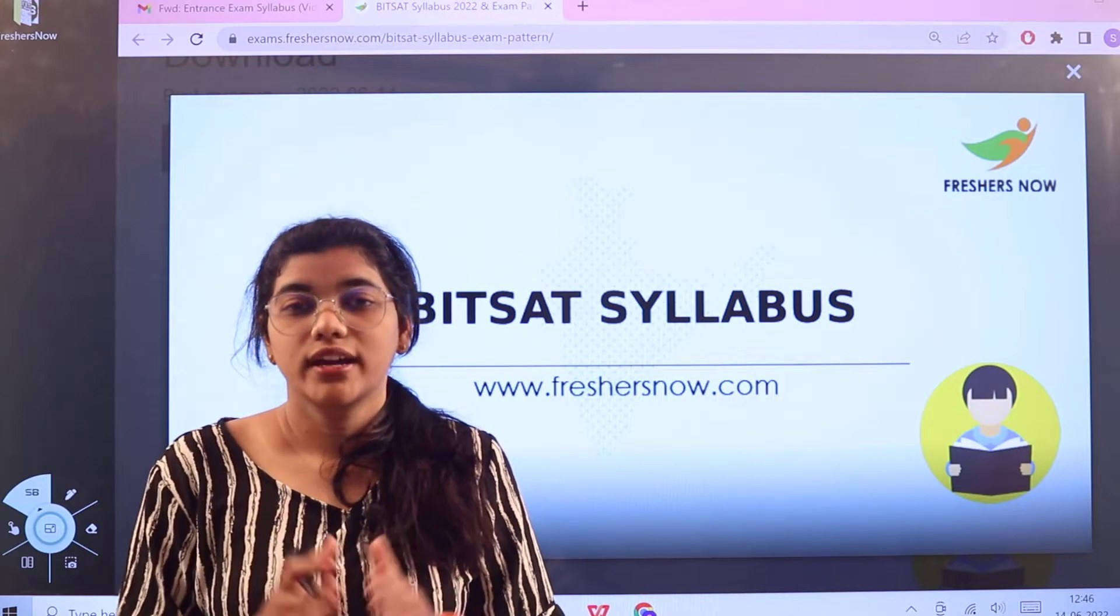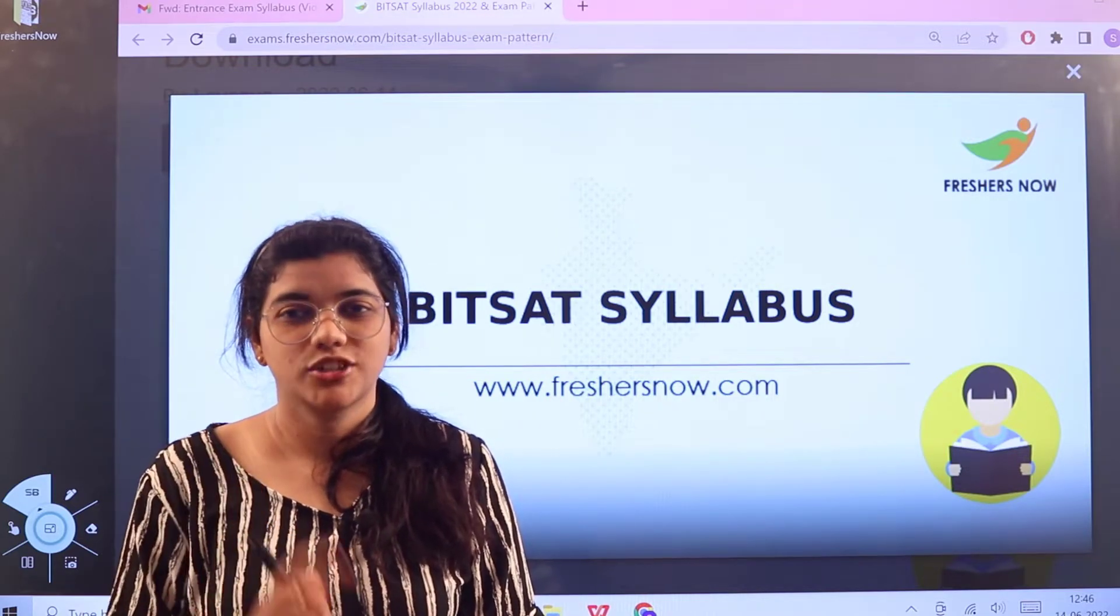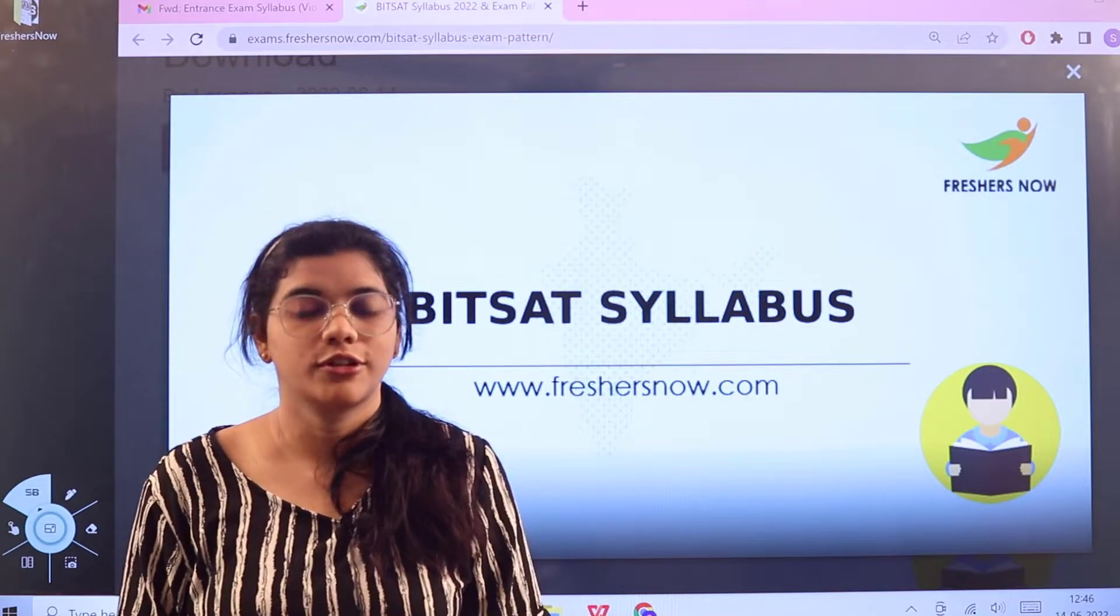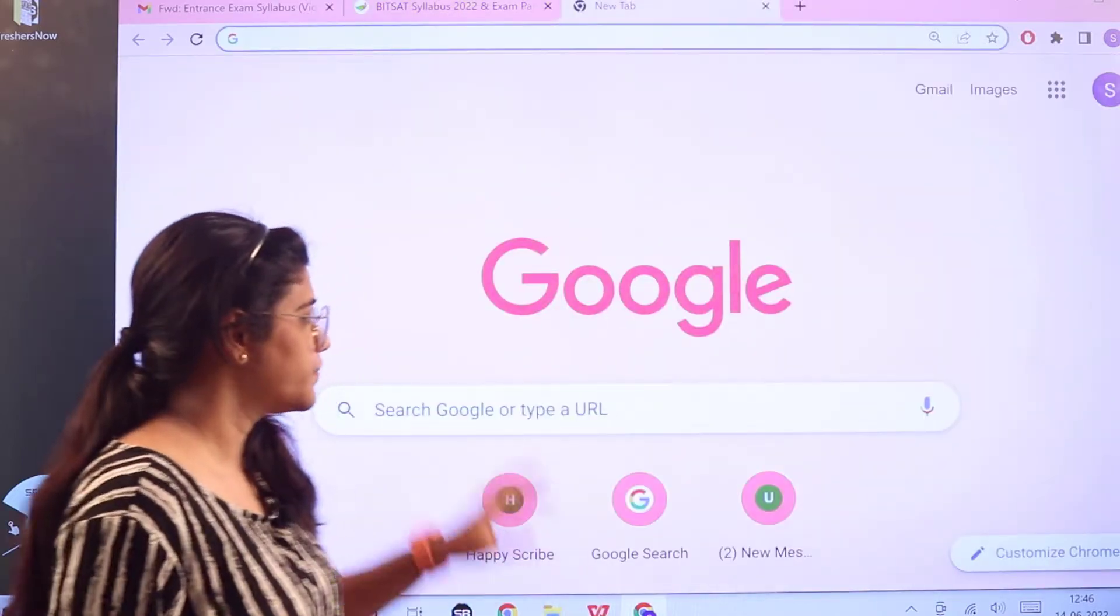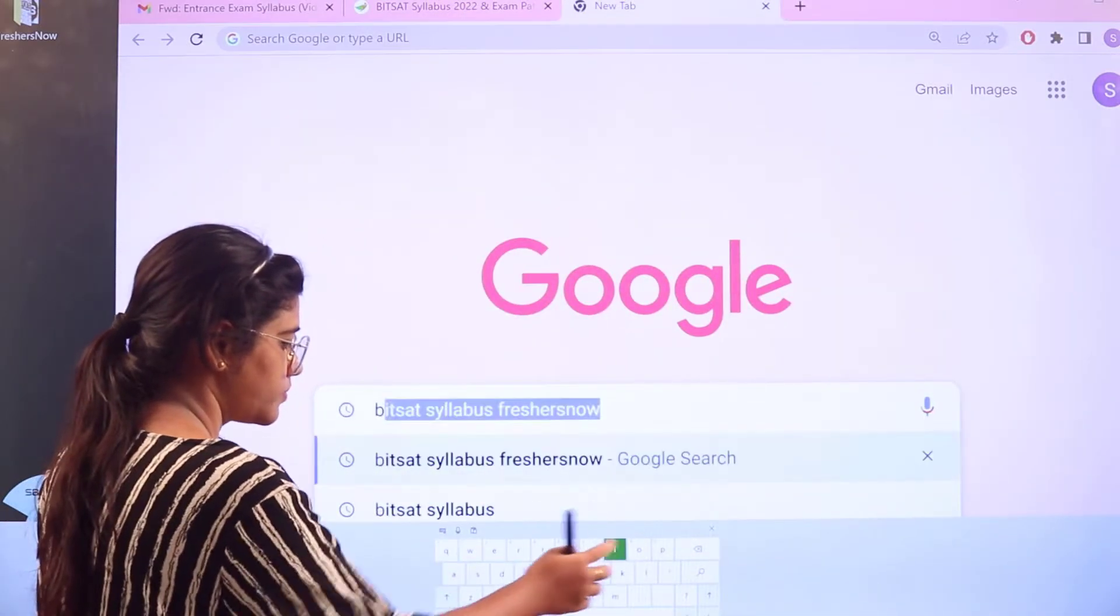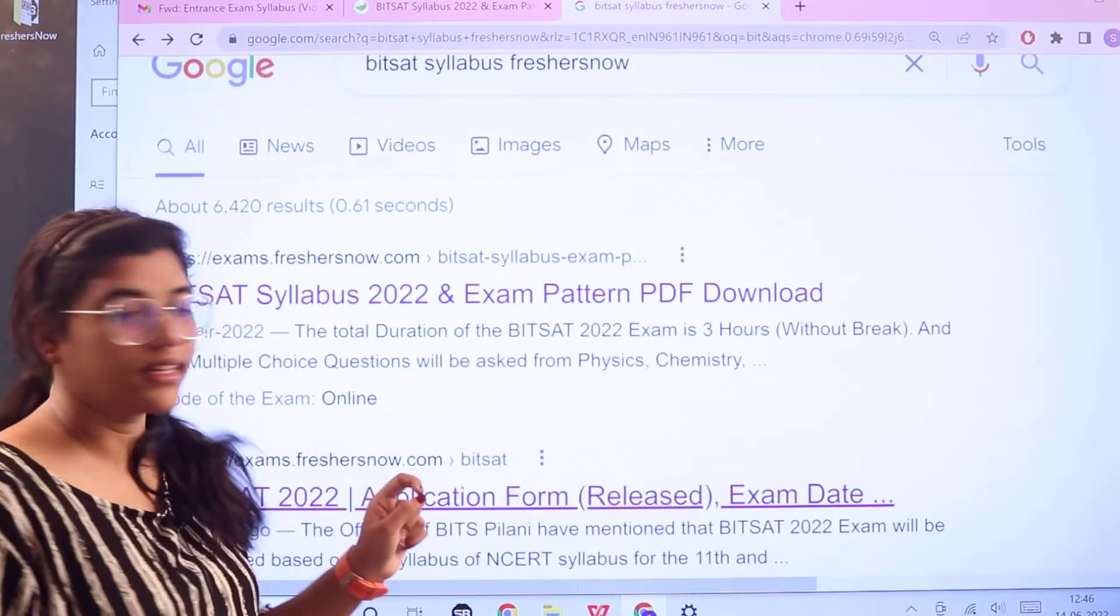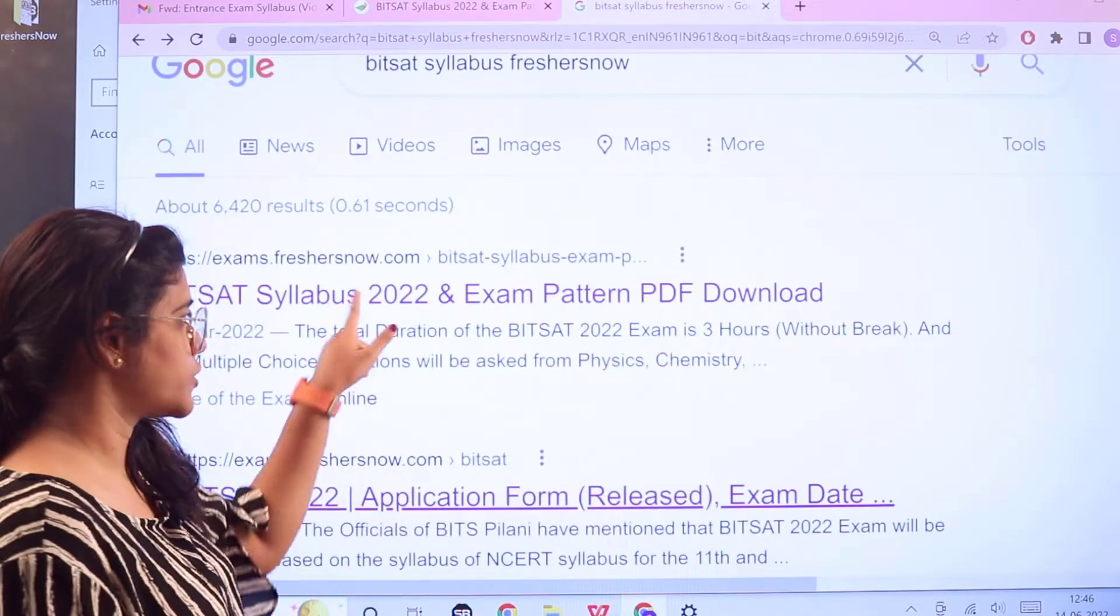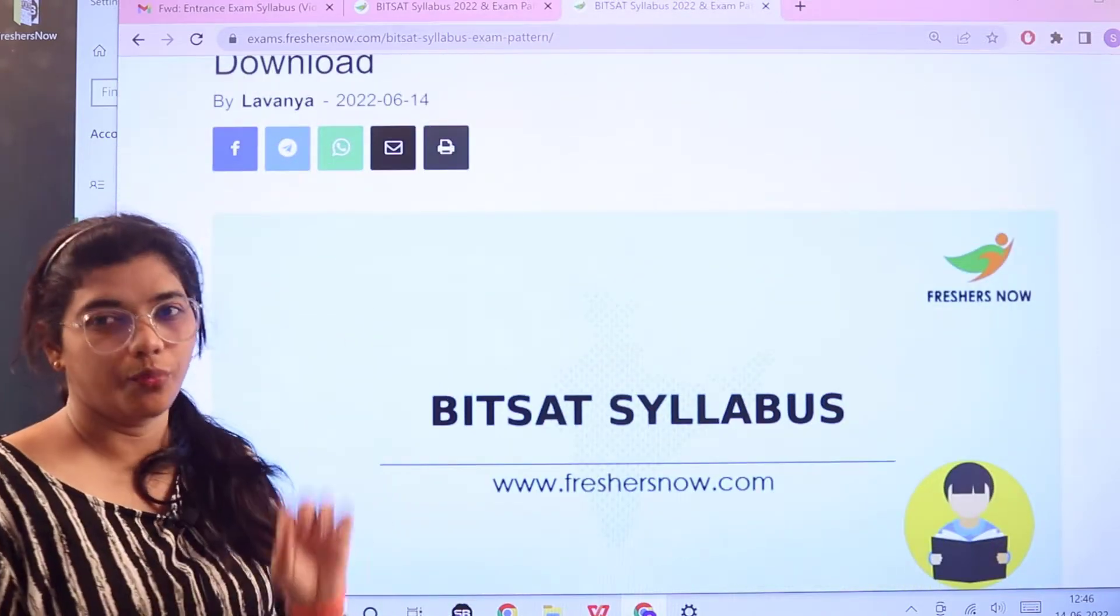So where you can access all of this information? Everything can be accessed from one page itself that is from freshersnow.com. All you have to do is head over to Google and search for BITSAT syllabus Freshers Now. And as you see, the first link itself is from Freshers Now. Give a click on this and this particular page would be opening up for you.